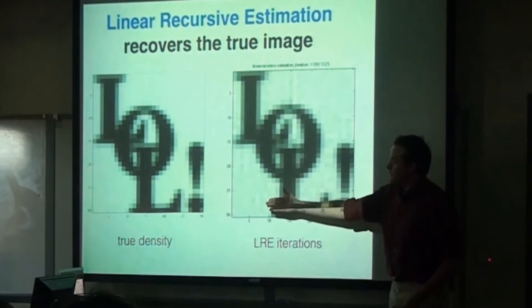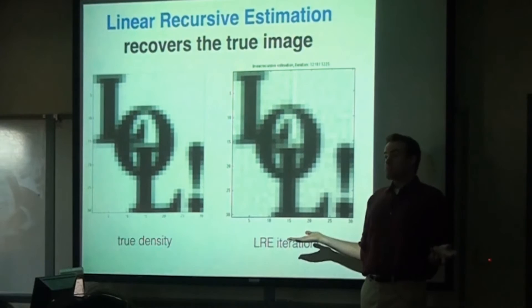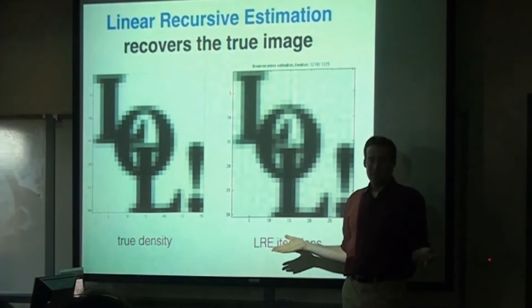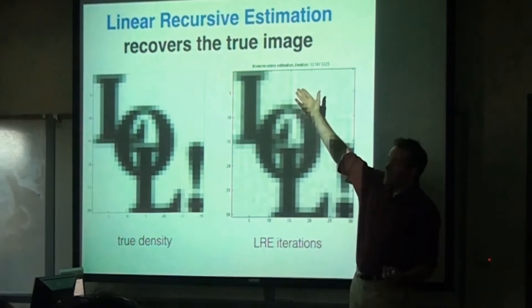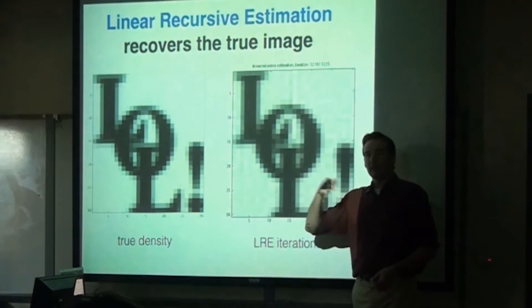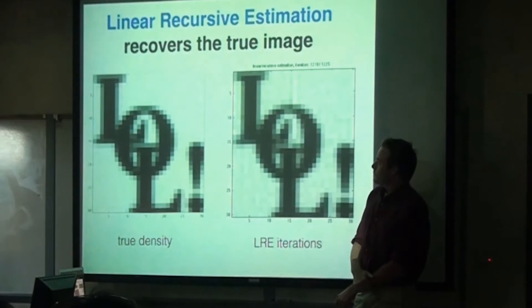This is pretty close to the true density, which is nice. Instead of using the linear recursive estimator, something you could always do is stack up all your measurements, build up the matrix, and do a MATLAB pseudo-inverse. You'd get essentially the same answer. The bonus of doing it recursively is you don't have to store a giant matrix — you just have to remember one vector. There are ways to do a pseudo-inverse via something called the rank-one update, but there are appealing properties of the recursive approach over storing all the measurements.